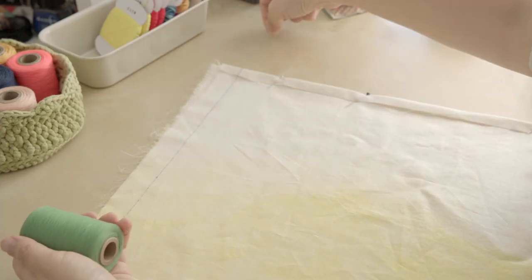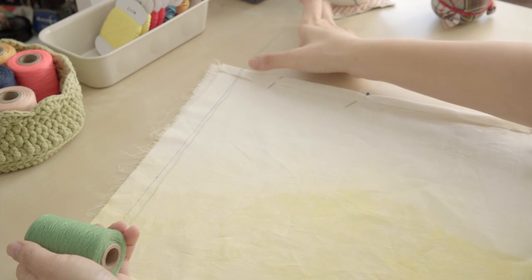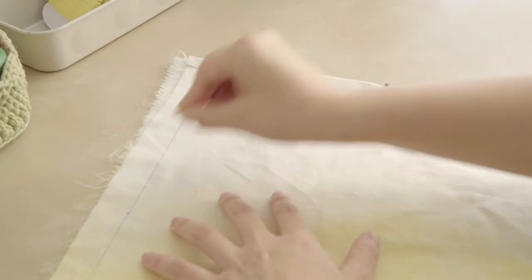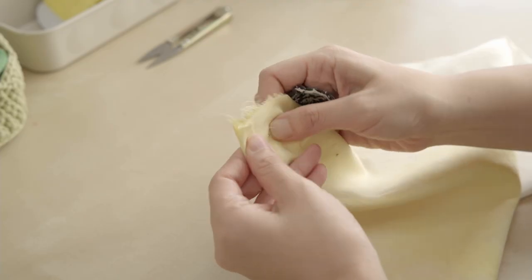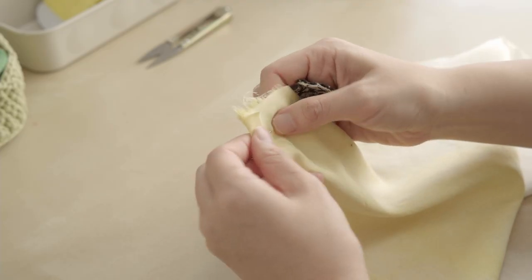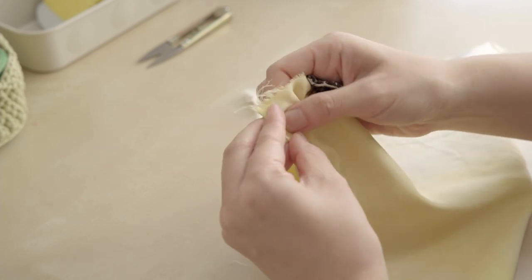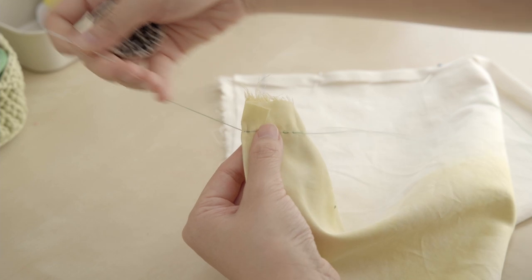You can use normal thin cotton thread and you want to use the same color as your fabric. To avoid the knots, I'll start a few stitches ahead. I'm using a contrasting color just for the purpose of demonstration.